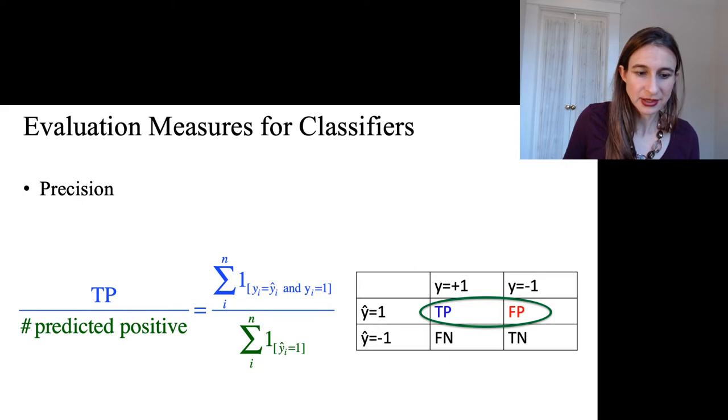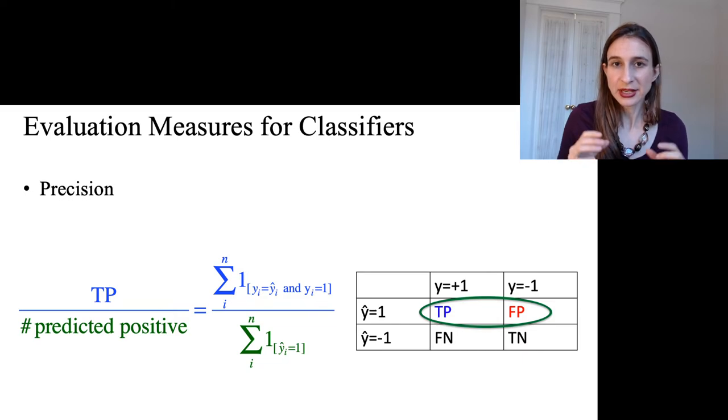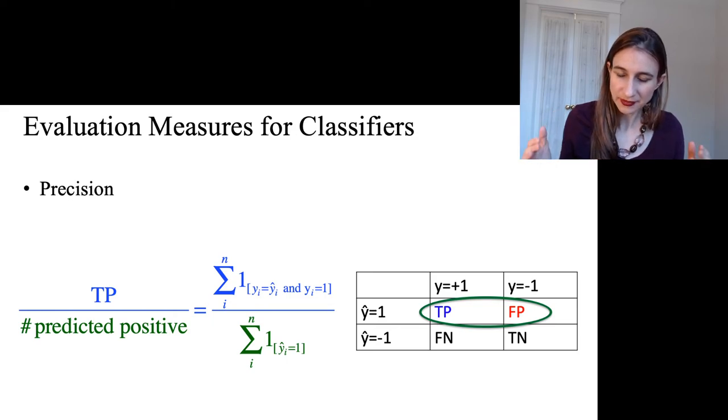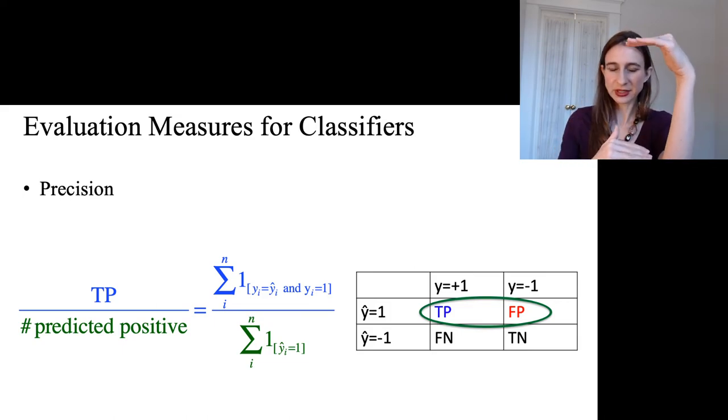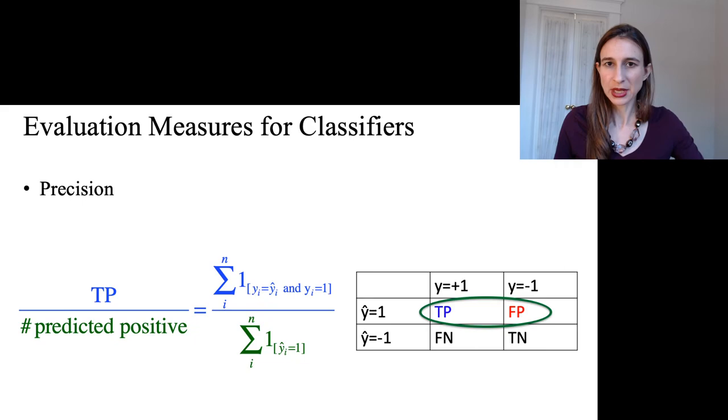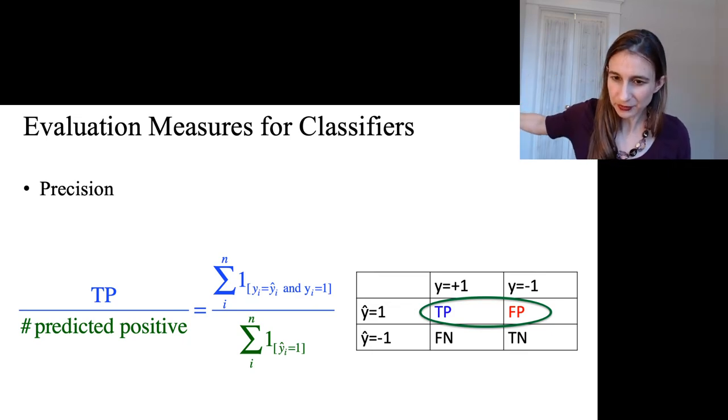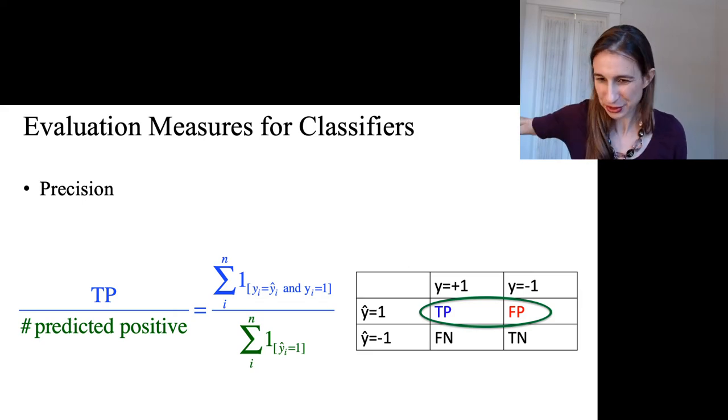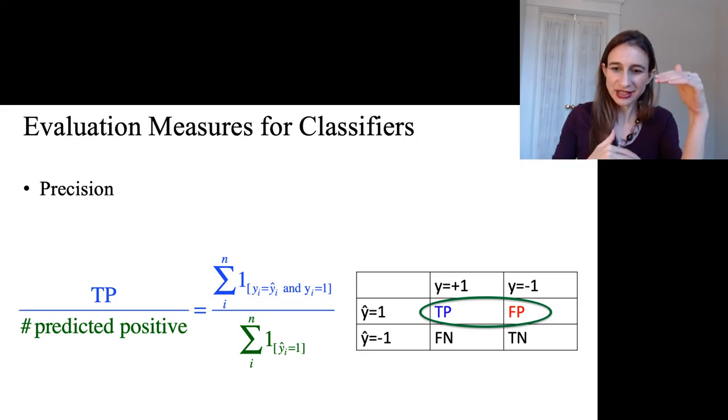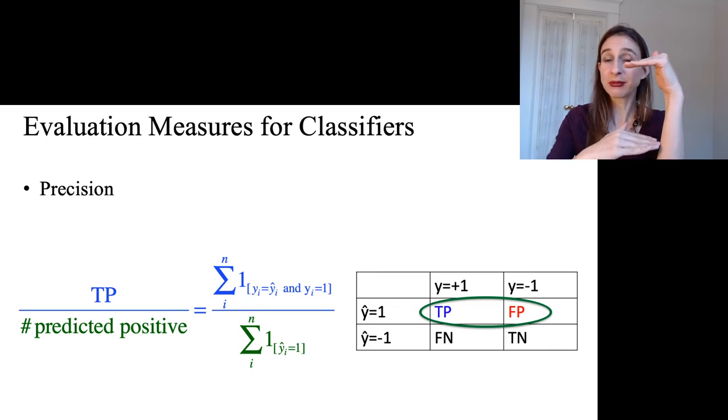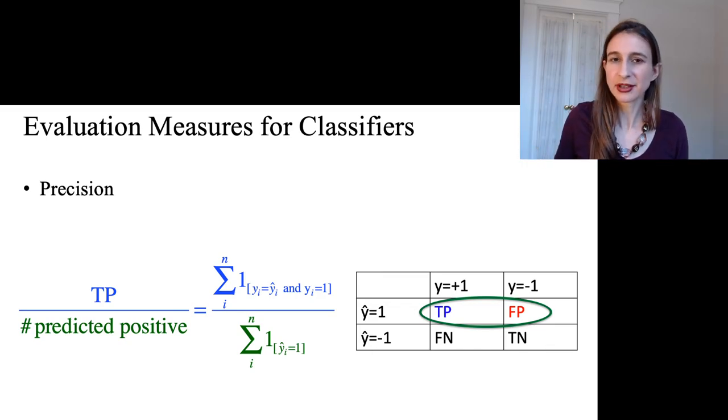And then precision is the fraction of predicted positives that were actually true positives. And now the way I remember this one is again in terms of information retrieval. So let's say I'm building my search engine, and for this particular evaluation measure, all I do is look at the first page of search returns. So I built the search engine, I look at the first page of search returns, and I just want to see how many of these are relevant to the query. I don't care whether I've captured all the relevant web pages. All I care about is that within whatever I returned, how many of those are actually relevant to the query. And so that's the precision.